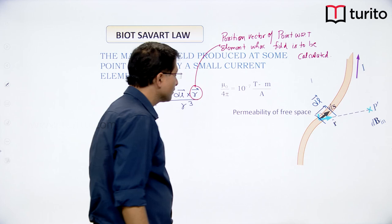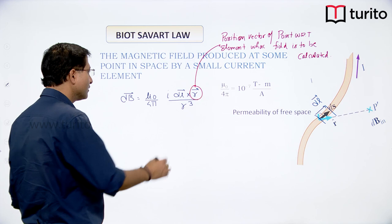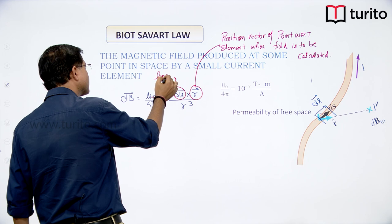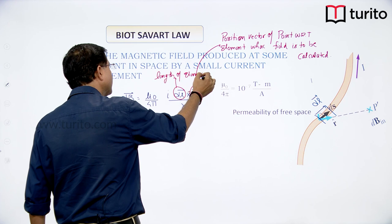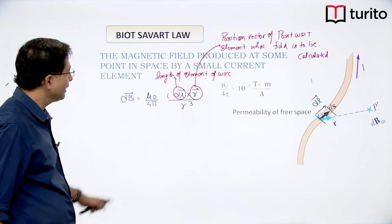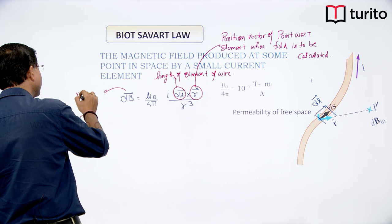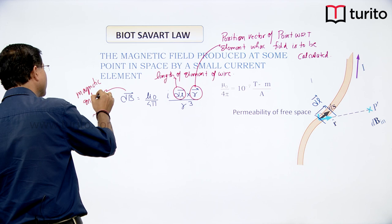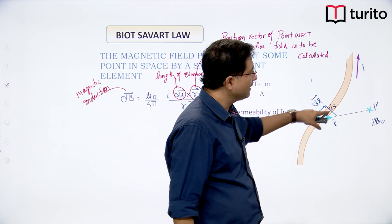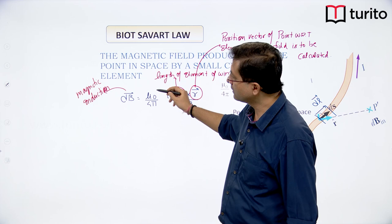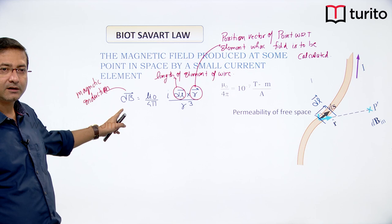To clarify: r⃗ is the position vector of the point with respect to the element where the field is to be calculated; dL is the length of the element on the wire; and B is the magnetic induction. The SI unit of B is Tesla.